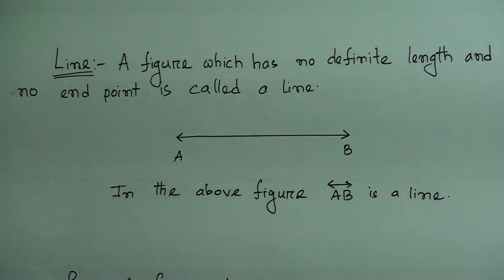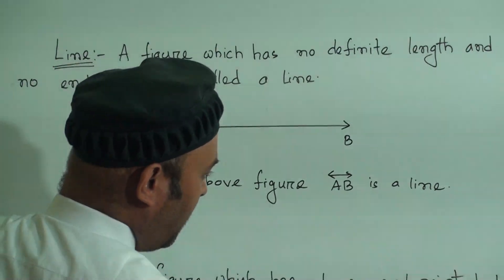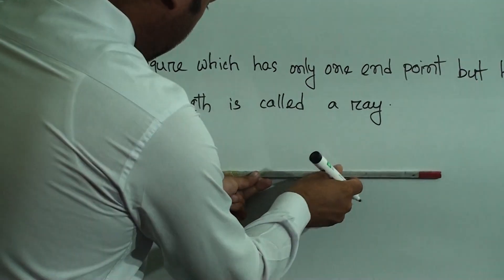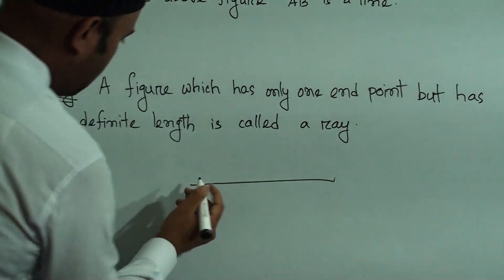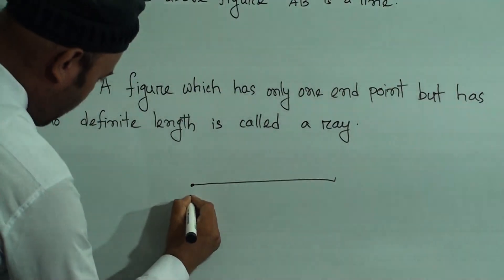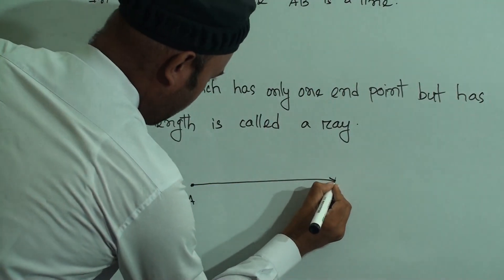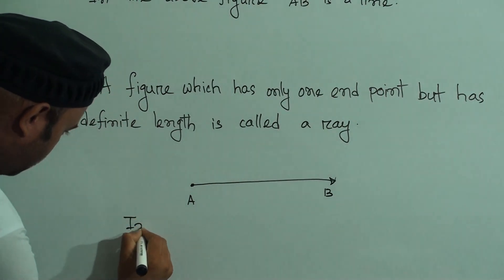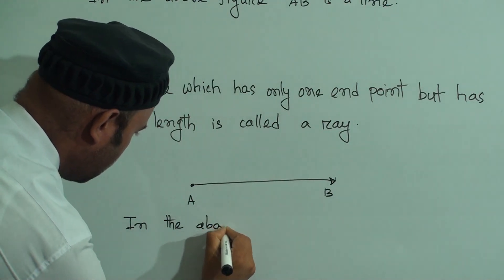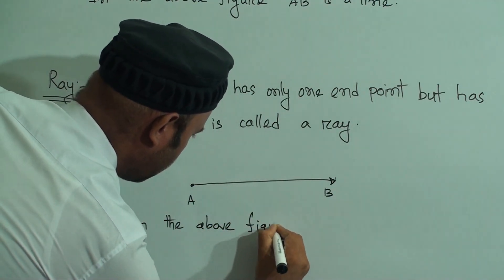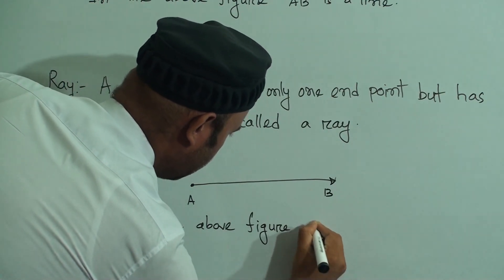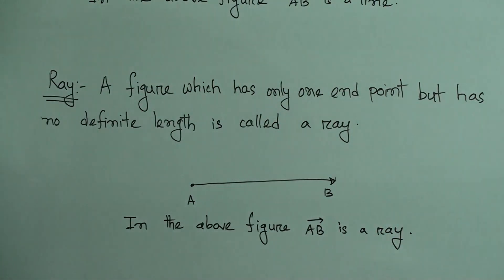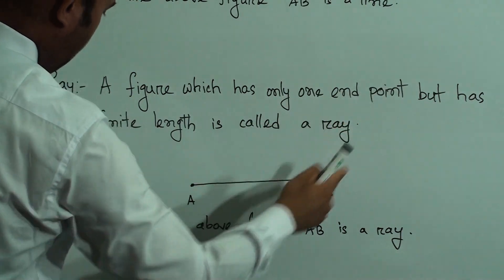Next one — ray. A figure which has only one end point but has no definite length is called a ray. Here there is only one end point A, and it has no definite length. In the above figure, AB is a ray.